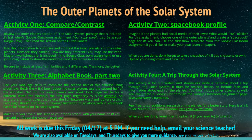Activity 1: Compare and Contrast. Review the inner planets section of the solar system passage included in last week's Google Classroom assignment — your copy should also be in your Google Drive. Then read the section on the outer planets. Use this information to compare and contrast the inner planets and the outer planets: How are they similar? How are they different? You may use the Venn Diagram worksheet included in the Google Classroom assignment, or use your imagination to show similarities and differences in a fun way. Be sure to include at least four similarities and four differences — the more, the better.